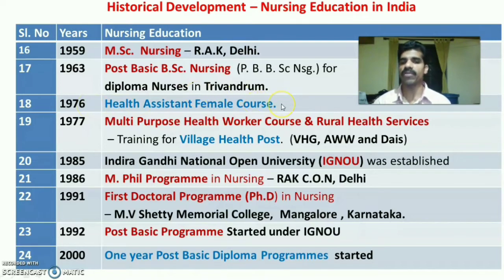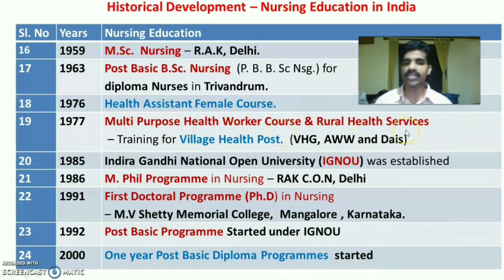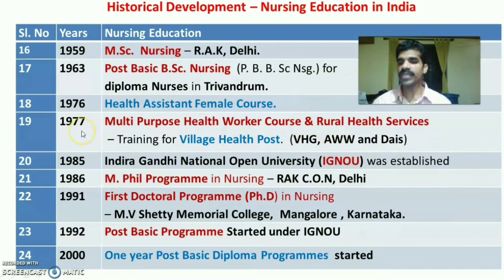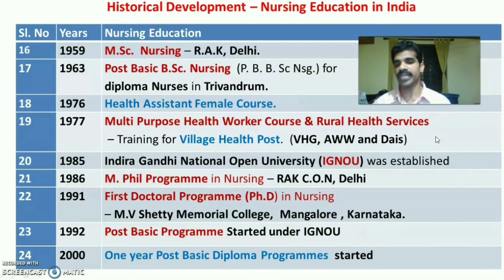In 1976, the Government of India started Health Assistant Female Courses. Then in 1977, the Government of India introduced Multi-Purpose Health Worker Courses along with Rural Health Services. Rural Health Services included training for Village Health Guides, Anganwadi Workers, and DAIS, as per the recommendation of the Srivastava Committee in 1975.